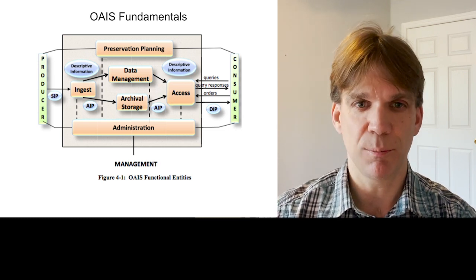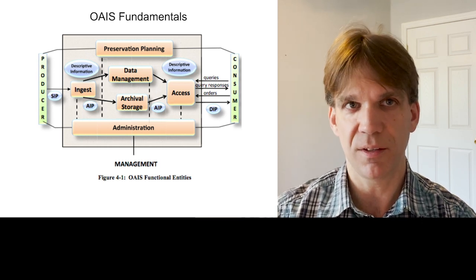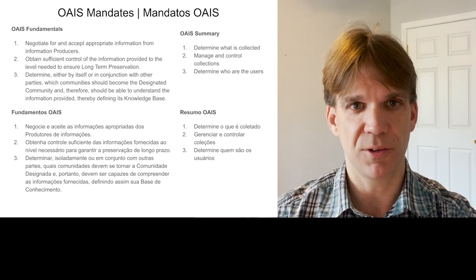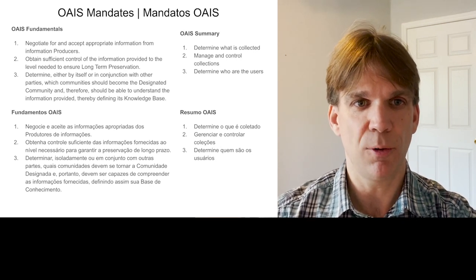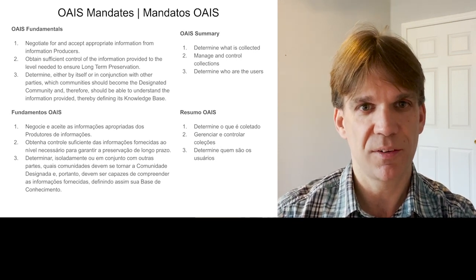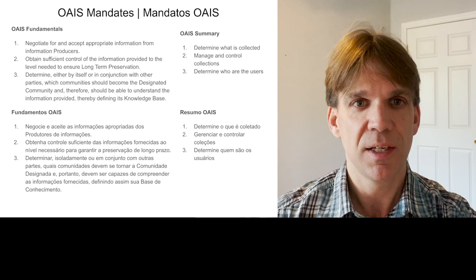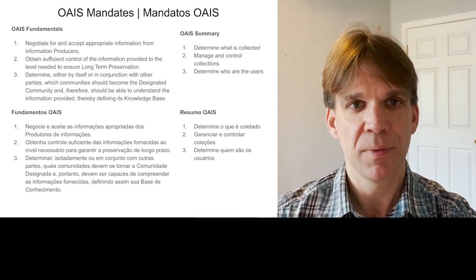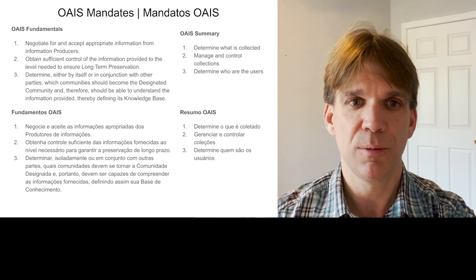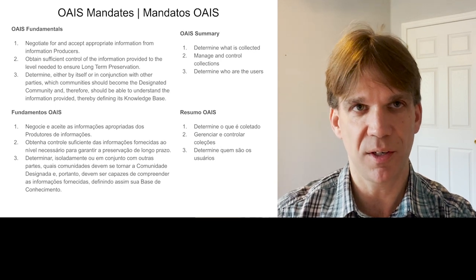As a new archivist, I really appreciated the simplicity and order of these images, showing the most relevant entities, functions, and sets of data within the entire archival process. The OAIS model also has a section called Mandates, that lists six fundamental functions of an archive. In this slide, I list the first three of the OAIS mandates, and on the right provide a more concise summarization. The first three mandates could be summarized as: one, determining what particularly is collected; two, managing and controlling the collections; and three, determining who are the users—the target communities that the archive is seeking to serve.